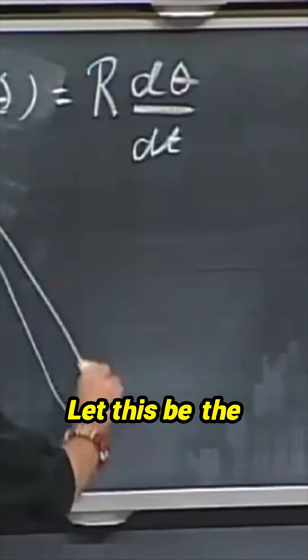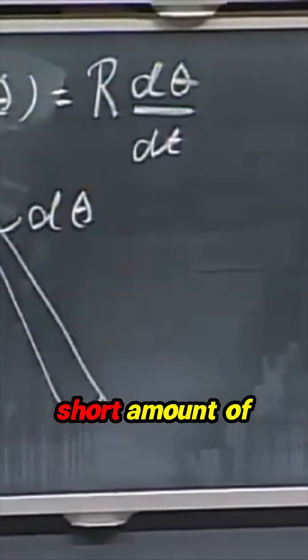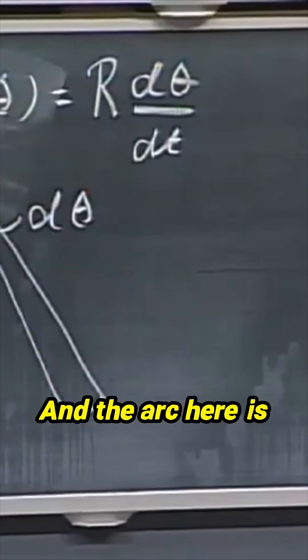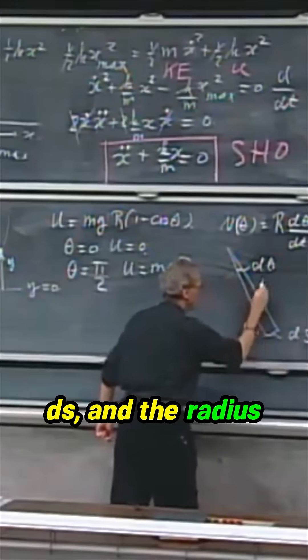Let this be the angle d theta, so it moves in a short amount of time over an angle d theta. And the arc here is ds, and the radius is r.